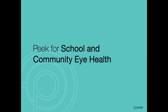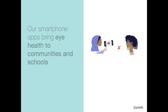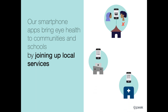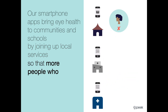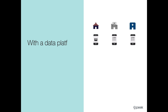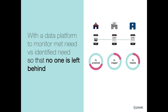PIC technology can be used for either school or community eye health programs. Our smartphone app brings eye health to communities and schools, helping to link patients who have an eye health need to services so that more people who are screened can reach treatment. With a data platform that provides real-time data, programs are able to monitor the met need versus identified need so that no one is left behind.